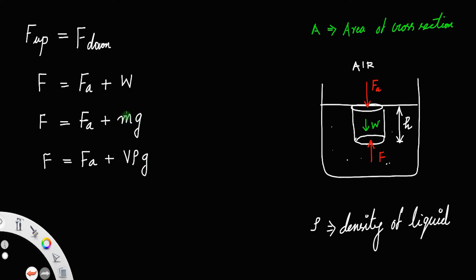Mass of any body equals its volume times density. For a cylinder of base area A and height h, volume equals base area times height, which is A h. So F equals F_a plus A h rho g.